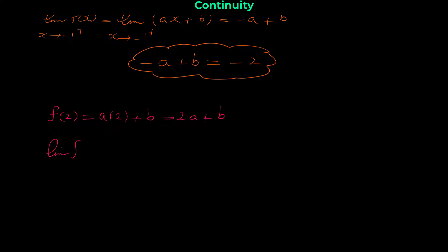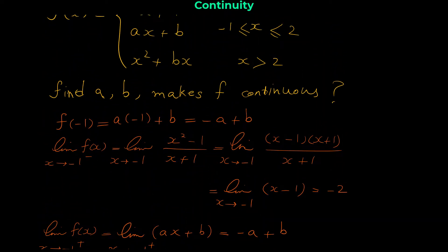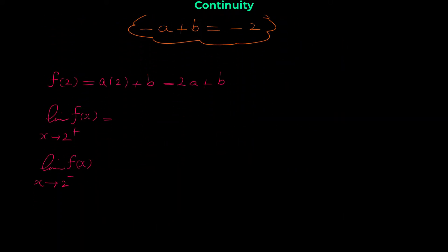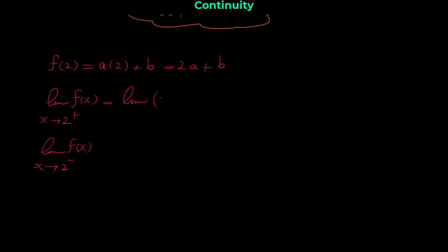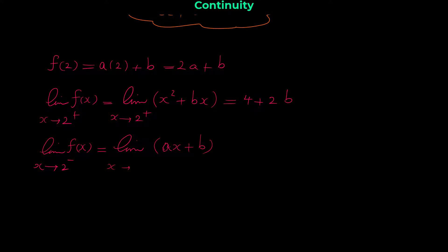For the right limit as x approaches 2 from the right, we use x² + bx. Plugging in 2 gives 4 + 2b. For the left limit as x approaches 2 from the left, we use ax + b. Plugging in 2 gives 2a + b.